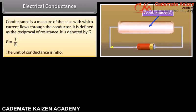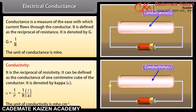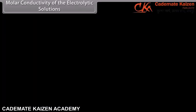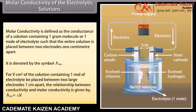Electrical resistance: Every conducting material offers some obstruction to the flow of electricity, called resistance. Ohm's law states that the potential difference across a conductor is directly proportional to the current flowing through it: V = IR, or V/I = R. The ratio of potential difference to current is constant and is called resistance; its unit is ohm. Resistivity is the resistance offered by a conductor of 1 cm length with area of cross section equal to 1 cm². The resistance R = ρL/A, where ρ is the specific resistance or resistivity.